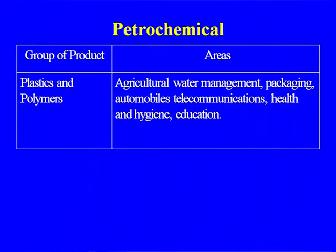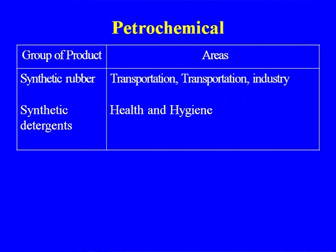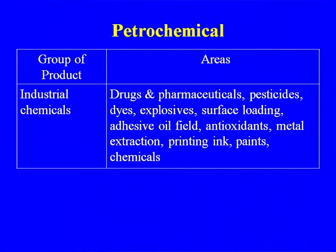Products of the petrochemical industry include: plastics and polymers, agriculture and water management, packaging, automobile, telecommunication, health, hygiene, and education. Synthetic rubber is used in the transportation industry; synthetic detergents in health and hygiene. Industrial chemicals are another important product, including drugs, pharmaceuticals, pesticides, dyes, explosives, surface coating, adhesive oils, antioxidants, metal extraction, printing, and paints. India's per capita consumption of petrochemicals is about 5 kg compared to the global average of 25 kg and China's consumption of around 25–30 kg.